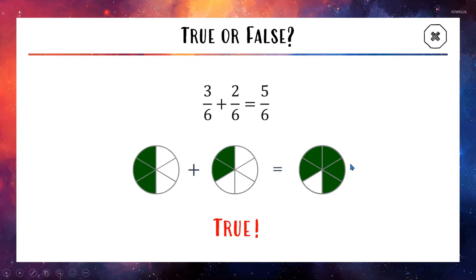What I'm trying to get across is that if you're adding fractions and the bottom number is the same, it's nice and easy — you keep the denominator the same and just add the numbers on top. When the denominator matches you're all good, and the same rule applies for subtraction as well.